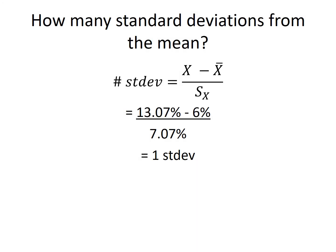Now that we know the mean and sample standard deviation for our distribution, we can find out how many standard deviations 13.07% is away from the mean. How do we do that? We use our formula here.